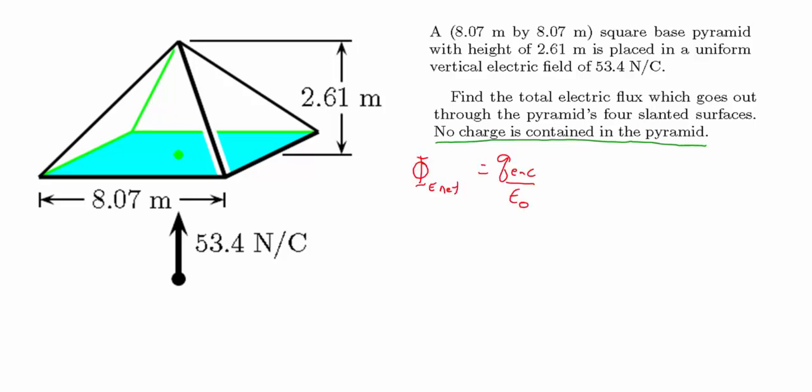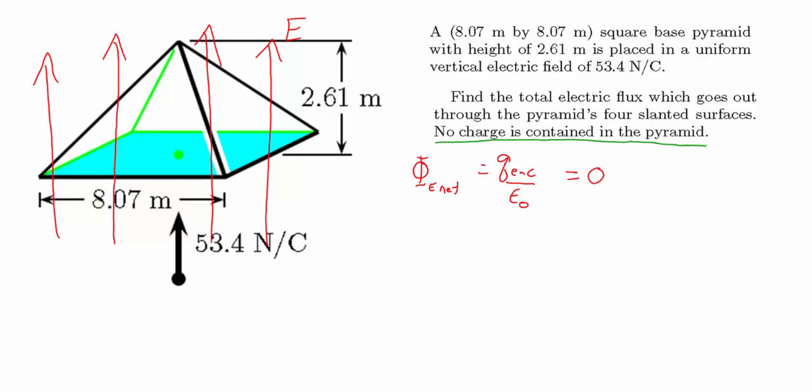The reason this is important is because we're going to use Gauss's law, which tells us that the net electric flux through a surface equals the enclosed charge divided by epsilon zero. Because no charge is contained in the pyramid, the net electric flux must be zero. This tells us every electric field line that enters the pyramid also comes back out, so the flux out through the four slanted surfaces is equivalent to the flux going in through the bottom.